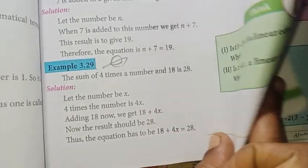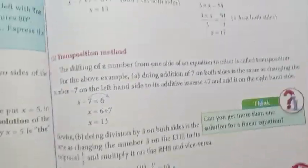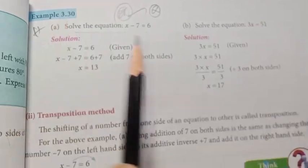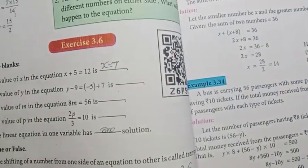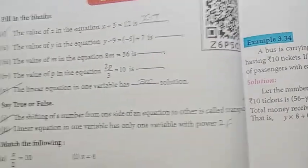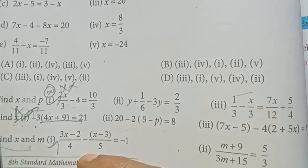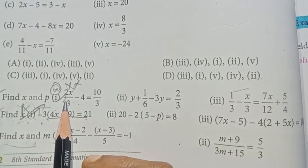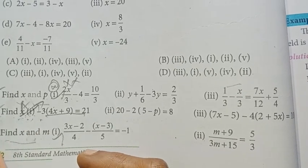Page number 99: example 3.29 important question — add it. Page number 101: example 3.30 important. Page number 102, exercise 3.6 — one mark questions. Fourth, fifth, and sixth questions are important; fourth is repeated. First and sixth questions also.